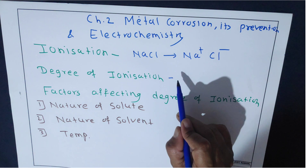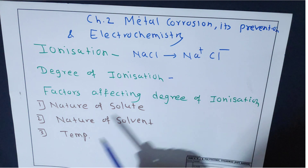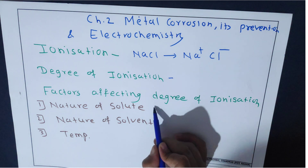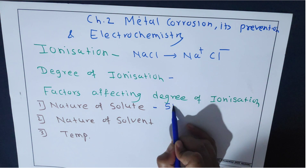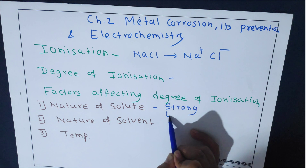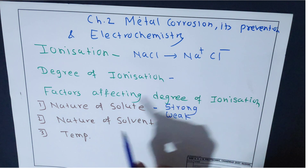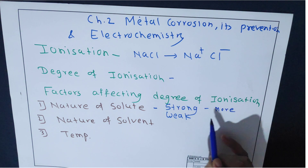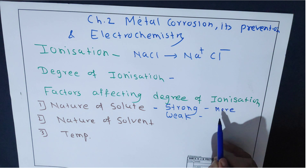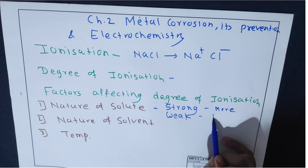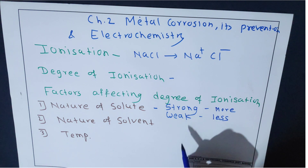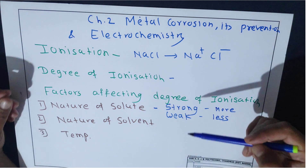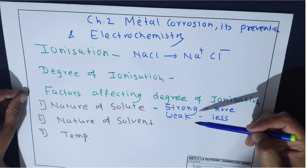The degree of ionization means the rate of ionization. It depends upon three factors: nature of solute, nature of solvent, and temperature. Nature of solute means whether the solute is a strong electrolyte or weak electrolyte. If the solute is a strong electrolyte, degree of ionization will be more; if weak electrolyte, degree of ionization will be less. Strong electrolytes are strong acids, strong bases, and strong salts; weak electrolytes are weak acids, weak bases, and weak salts.